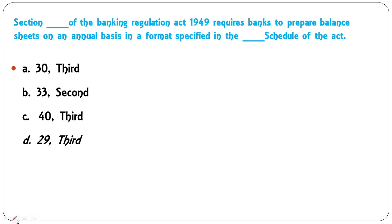Section 29 of the Banking Regulation Act 1949 requires banks to prepare balance sheets on an annual basis in a format specified in which schedule of the act? This provision is given in Section 29 of the Banking Regulation Act, and the format is given in the Third Schedule of the act, so D is the correct answer.